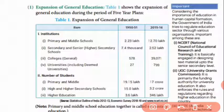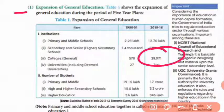You can see the expansion of general education during five year plans. In primary and middle schools, in 1950-51 there were 2.23 lakh schools, and after that 12.70 lakh. In colleges there were 578, now in 2015-16 there are 39,071. Number of students in primary and middle schools was 19 lakh, now 16-17 crore. In higher secondary schools, 15 lakh, now 3.2 crore. In higher education, 3.6 lakh, now 346 lakh.